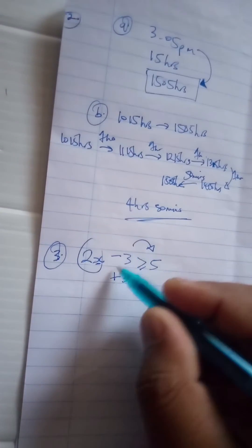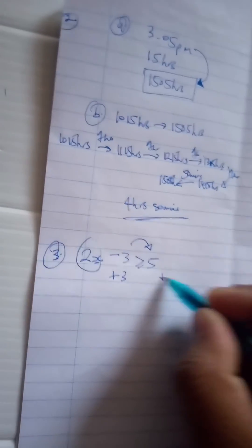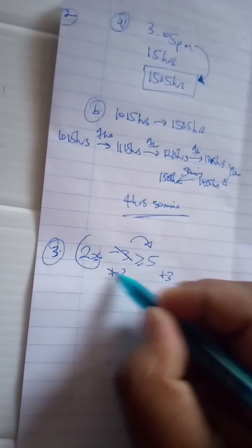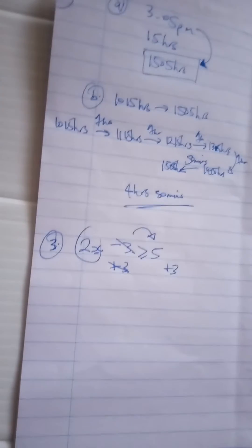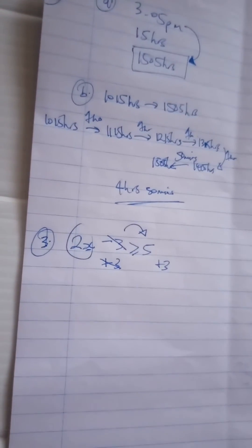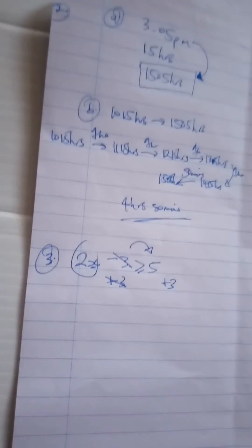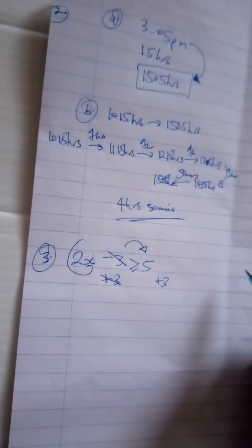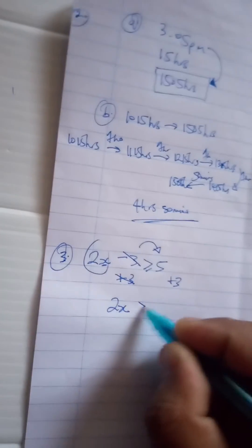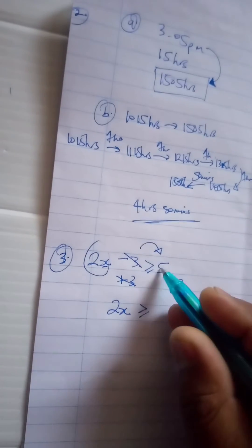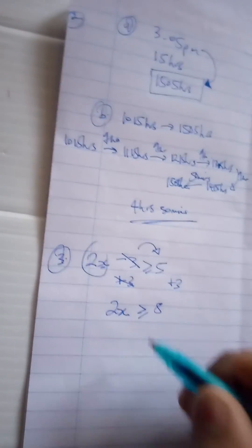Adding on this side and that side, they're going to cancel each other on this side, and then we add it on that side. So it's going to be 2x is greater or equal to 5 plus 3, which is 8.